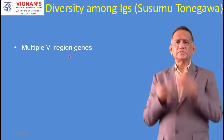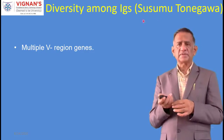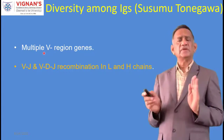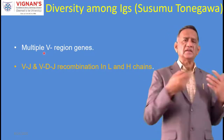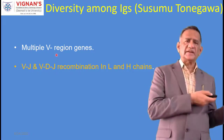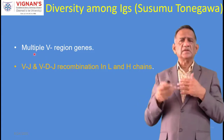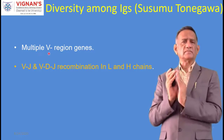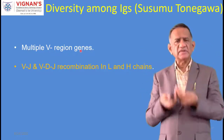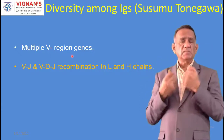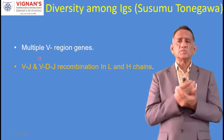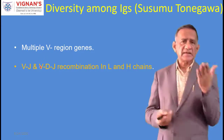Now let us look at diversity among immunoglobulins. This work was done by Susumu Tonigawa, a Nobel laureate from Japan who worked at MIT in the USA. If you are exposed to dengue, you develop immunoglobulins against dengue; to COVID-19, against COVID-19; to Ebola, against Ebola. Everybody wonders: how is this possible? We have only about 30,000 genes, yet the variety of pathogens and antigens - each with several epitopes - requires us to produce immunoglobulins in enormous numbers.